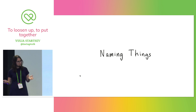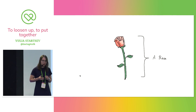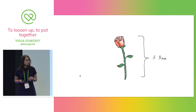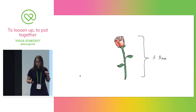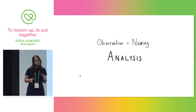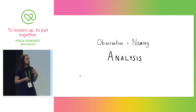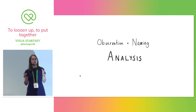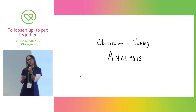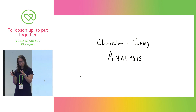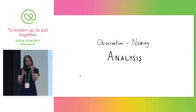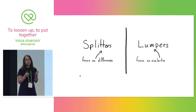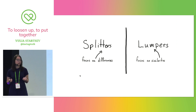Naming things — difficult in programming. Observation plus naming gives us analysis. We could take the symbols we already know, use the names we already know. But we can also use observation, just like we observed the lip of the chair. And then we can take our capacity to name and break things apart, and start looking at how we can name things.